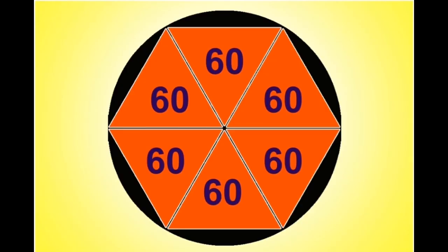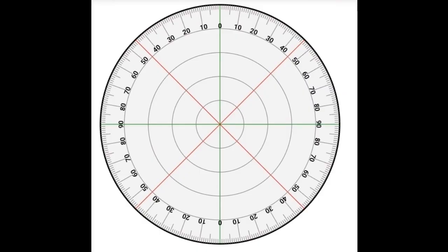If we were to draw an equilateral triangle with sides equal to the radius of the circle, we could fit a total of six such triangles inside a circle. Since the Babylonians used the sexagesimal numeral system, they considered each triangle to have a base value of 60. Thus, six triangles with a 60 base value gives us 360.